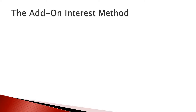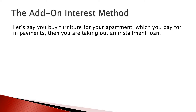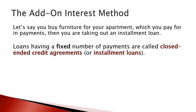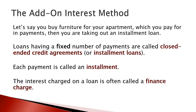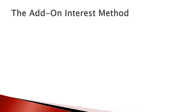Let's begin with the add-on interest method. Let's say you are buying furniture for your apartment for which you pay using payments — this means you are taking out an installment loan. Loans having a fixed number of payments are called closed-ended credit agreements or installment loans. Each equal payment is called an installment, and the interest charged on a loan is often called a finance charge.